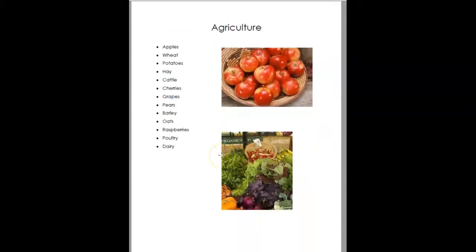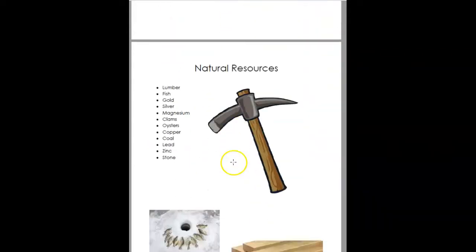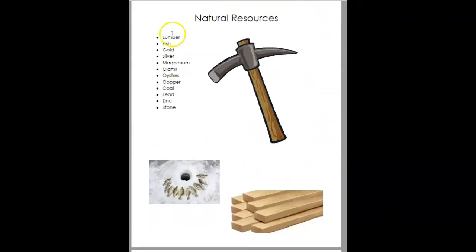Here's their agriculture and they just put bullets of what their agriculture was, along with some pictures. Their natural resources — natural means they're from nature, not man-made. One of their resources is obviously coal, and that's why they put that there, along with fish and lumber.